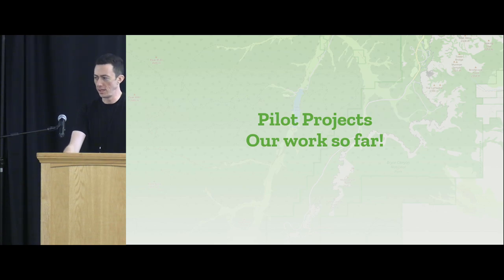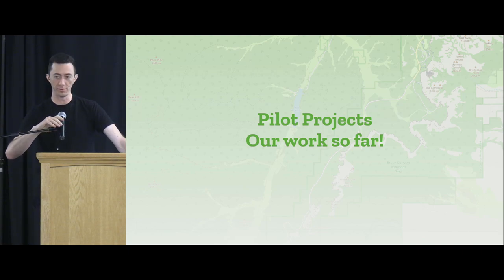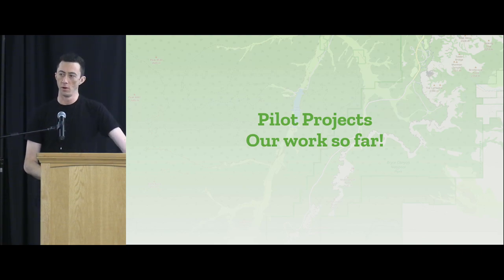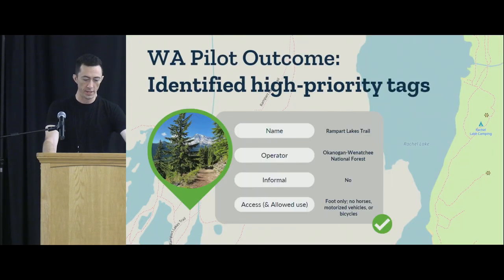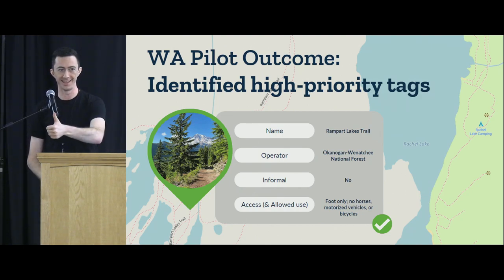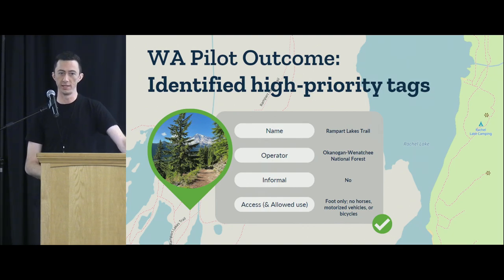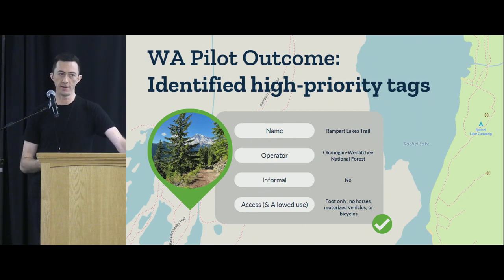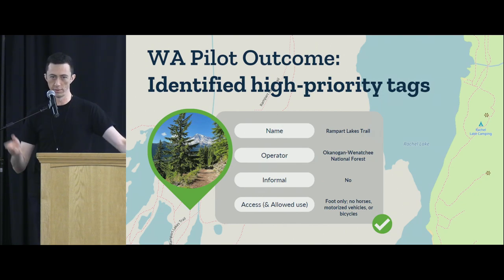We have been meeting every two weeks for about three years now and have done a lot of work. We started with a pilot project in Washington, where I live. Our goal for the pilot project was essentially to identify what the most important data gaps were in OpenStreetMap trail networks, and what it would look like if hiking apps — which we call renderers — had access to that data and what could they do with it that would impact the way people used those trails.